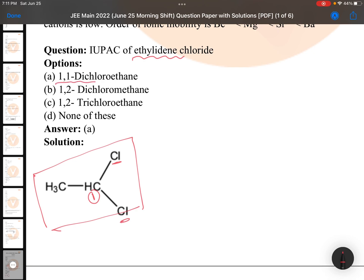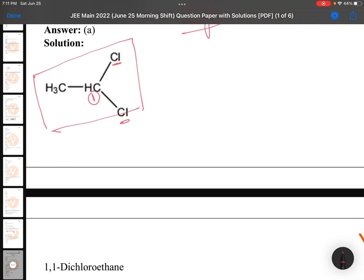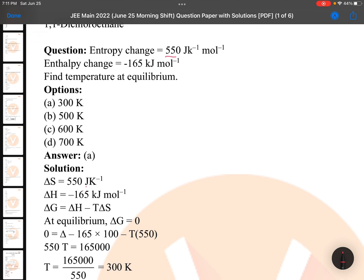Entropy change 550, enthalpy change minus 165, temperature equilibrium. Delta G equals delta H minus T delta S - one very basic formula of thermodynamics. When a question is asked on this you have to say this is an easy question, but the only thing you need to concentrate is this is given kilojoules, this is in joules, so this must be multiplied by thousand. It is taken as 165,000. This is the only thing you need to remember, easy question definitely.